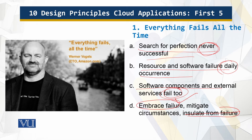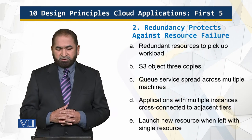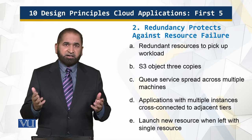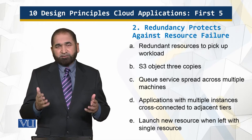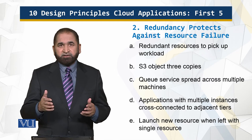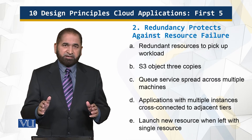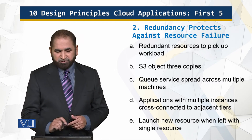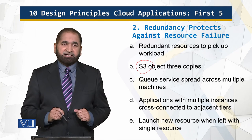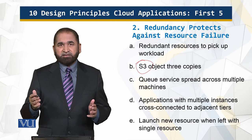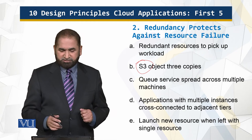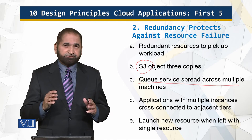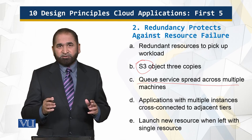The second principle: redundancy protects against resource failure — redundant resources pick up the load. When you have multiple resources, such as multiple hard disks or multiple processing units, and some of those units fail, there has to be an automated system monitoring all of this and distributing or assigning the load to the devices which are still working. For example, in the S3 case there are three copies of each data element, so if one disk drive or setup fails, the second copy is available.